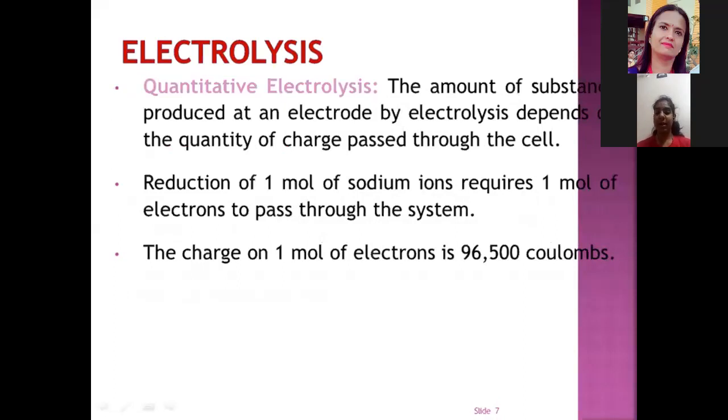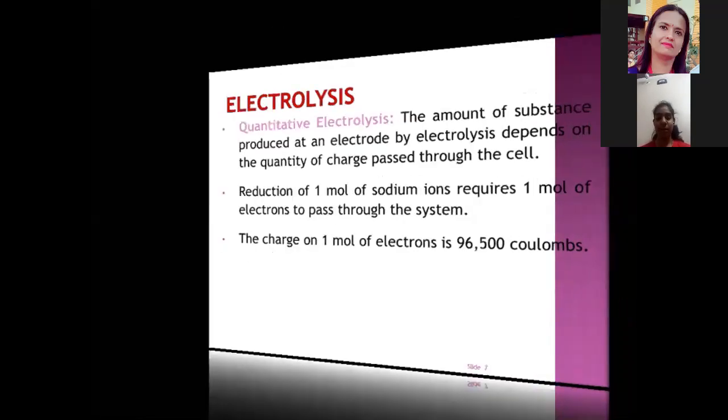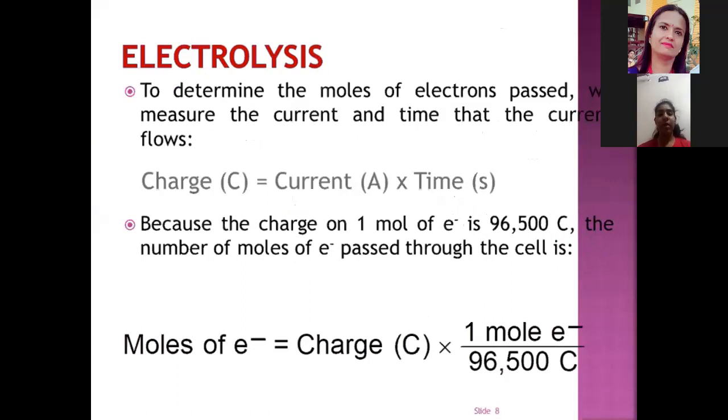Now, quantitative electrolysis. The amount of substance produced at an electrode by electrolysis depends on the quantity of charge passed through the cell. Reduction of 1 mole of sodium ions requires 1 mole of electrons to pass through the system. The charge on 1 mole of electrons is 96500 coulombs. To determine the moles of electrons passed, we measured the current and the time that the current flows. The charge equals current into time and the unit is ampere into second. The number of moles of electrons passed through the cell is moles of electron equals charge into 1 mole of electron upon 96500 coulombs.